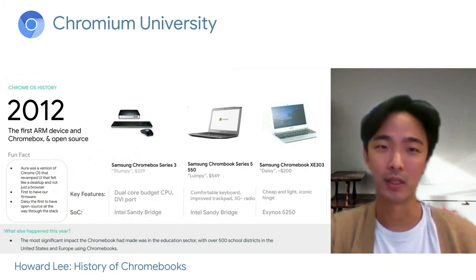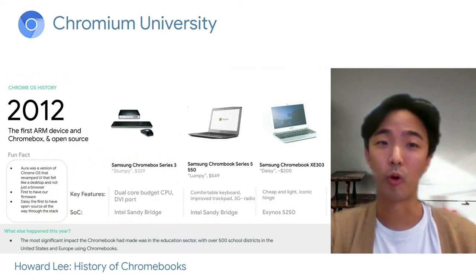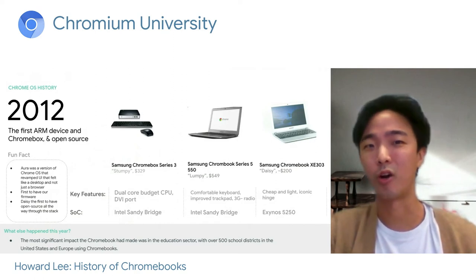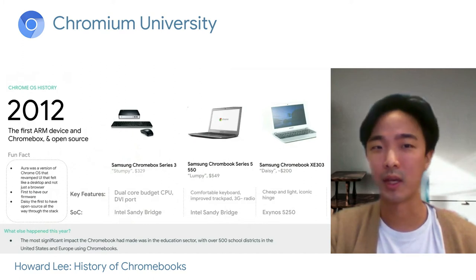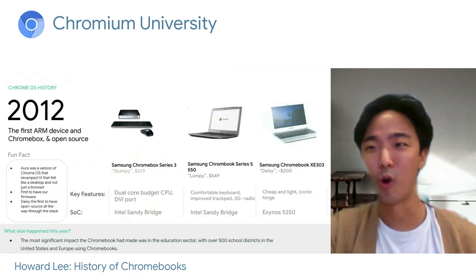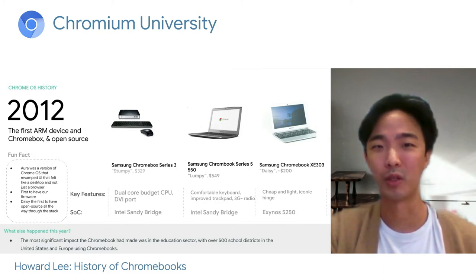We branched into building ARM devices and diversifying our form factors, and we made large strides in our open source experiment. There were a series of Samsung devices launched that year — the Chromebook Series 3 and the Chromebook Series 5. These were all based on the Intel Sandy Bridge SoC, and they were the first devices to have our own firmware. Despite a lot of skepticism about our ability to build a homegrown firmware, we were able to pull this off, and we were very happy about it.